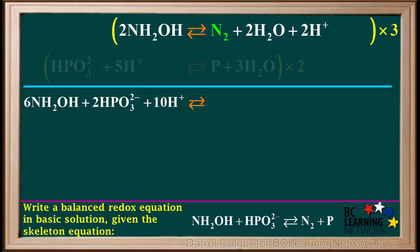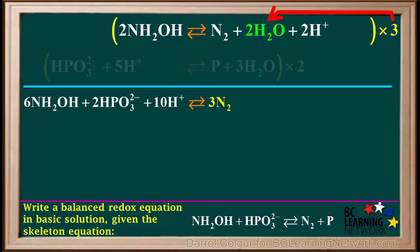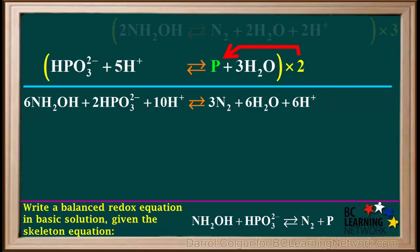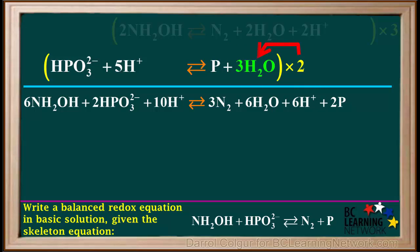On the top right, we have three times 1 N2, which is 3N2. Three times 2H2O, which is equal to 6H2O. And three times 2H+, which equals 6H+. On the bottom right, we have two times P, which is equal to 2P. And two times 3H2O, which is equal to 6H2O.